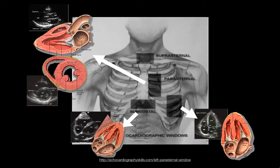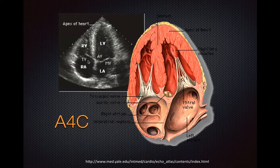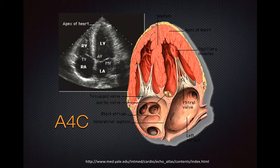We'll be focusing primarily on the apical 4-chamber view, since this is the view that we typically use to look for evidence of RV strain. The main structures we're looking at here are the right ventricle, left ventricle, right atrium, left atrium, the tricuspid valves, and the mitral valves.